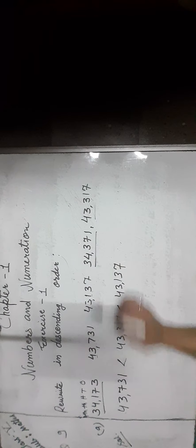Now compare the remaining numbers. The ten thousands place digits are same. We move to the hundreds place — hundreds place digit is 1 and 3. Three is greater than 1, so we write 34,371. At last, we write 34,173.